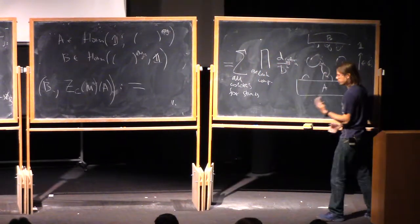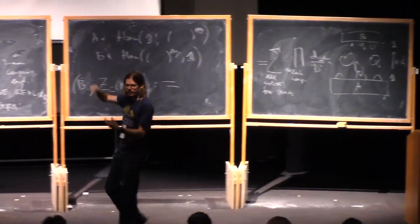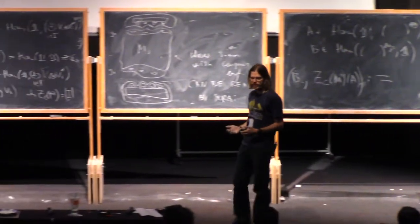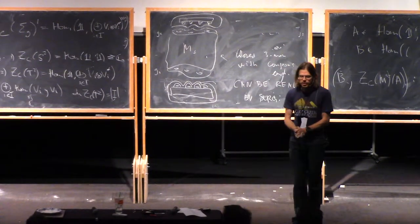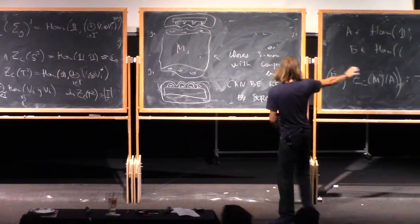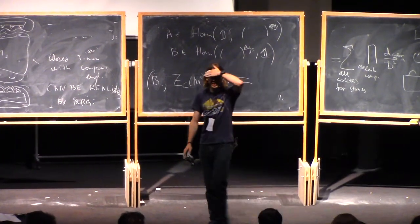But if the diagram is a kind of closed diagram, then it just gives me hom from identity object to identity object, and the space of these homs is just C. So according to these rules, I can assign for any diagram some number. For closing, yes?